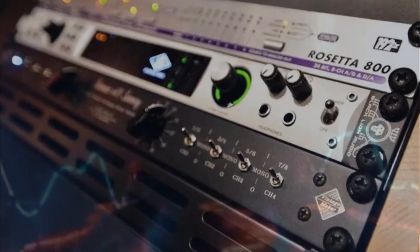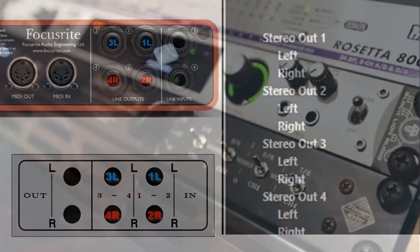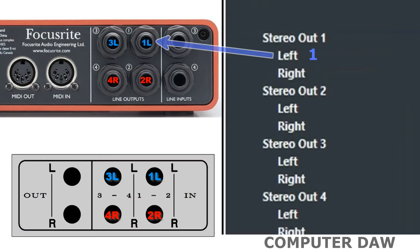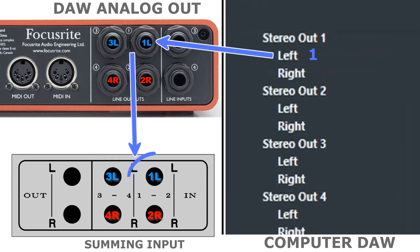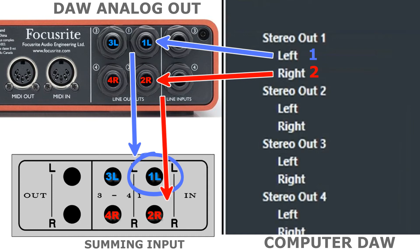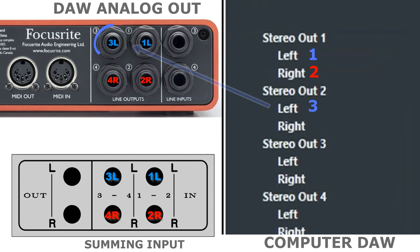Here's a very basic example for stereo routing from computer to summing mixer: route from computer stereo left channel 1 to interface left analog out 1, then connect to summing input left 1. Route from computer stereo right channel 2 to interface right analog out 2, then connect to summing input right 2. And so on — left 3 out to left 3 in, and right 4 out to right 4 in.